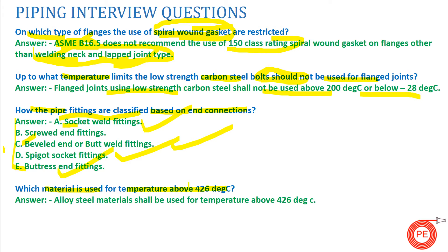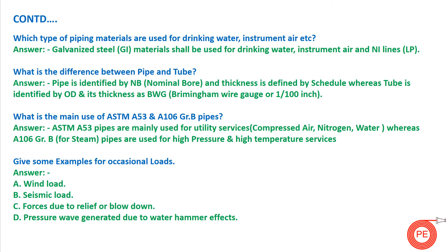The next question is: which material is used for temperatures above 420 degrees Celsius? In refineries, steel industries, and process or chemical industries, one of the highest temperature fluids is steam. For carrying steam at high temperatures above 426 degrees Celsius, alloy steels are used. Normal carbon steel pipes are not used because crystalline distortion takes place inside the material and may cause failure at a later stage of life.